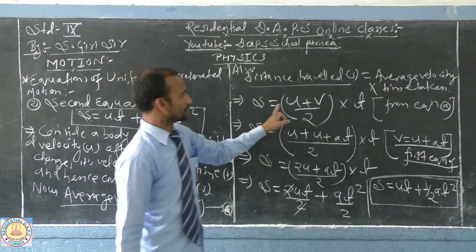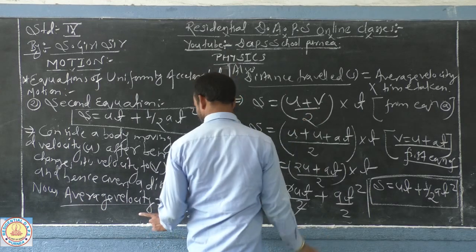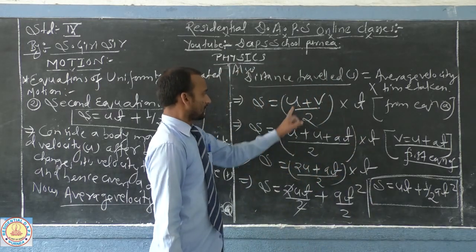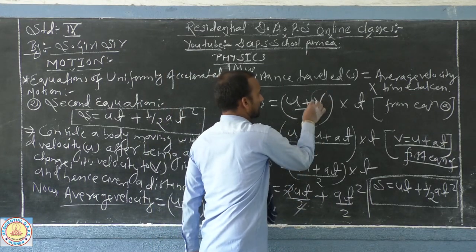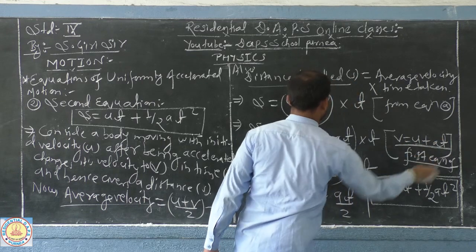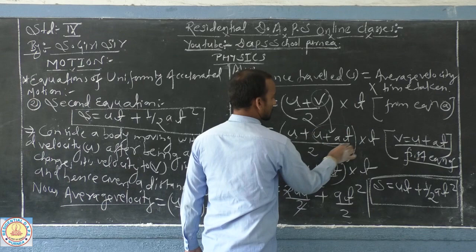Now, s equal to average velocity u plus v by 2 into time. Next, u remains the same, but instead of v, we are using u plus a t from the first equation. Here you may see v equal to u plus a t.